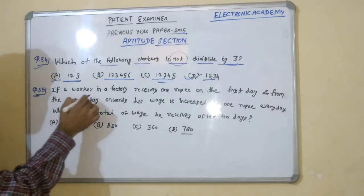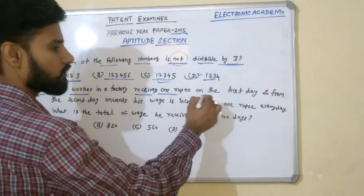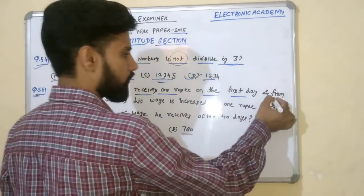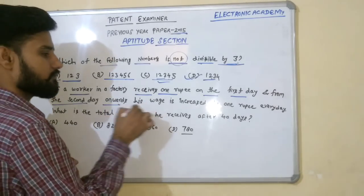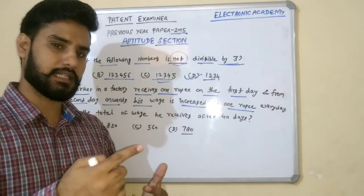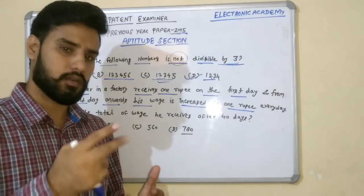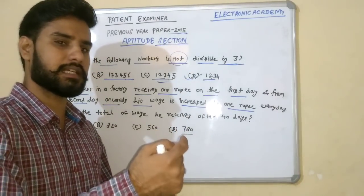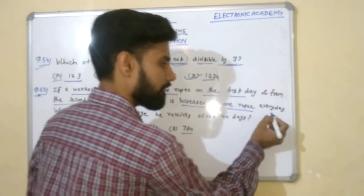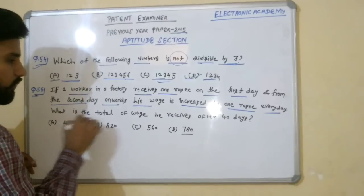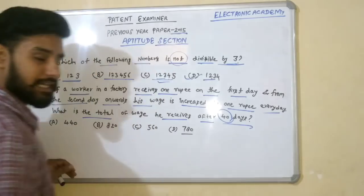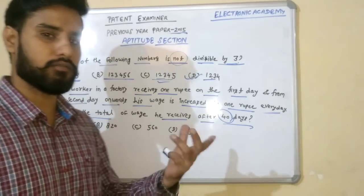Now the 55th question: if a worker in a factory receives 1 rupee on the first day, and from the second day onwards his wage increases by 1 rupee every day, what is the total wage he receives after 40 days? So on day 1 he gets 1 rupee, day 2 he gets 2 rupees, day 3 he gets 3 rupees, and on day 40 he gets 40 rupees.